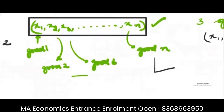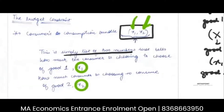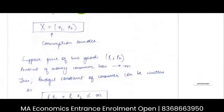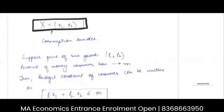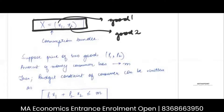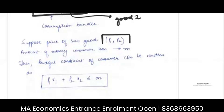To plot an n-good consumption bundle, I would need n axes and plot in that n-dimensional space, which is even more difficult. Since the idea is just to understand what a budget line is all about, we don't need an n-commodity consumption bundle. A two-commodity consumption bundle suffices and solves the same purpose. So I represent my consumption bundle as x = (x1, x2), where x1 is units of good one consumed and x2 is units of good two consumed. This is a vector.